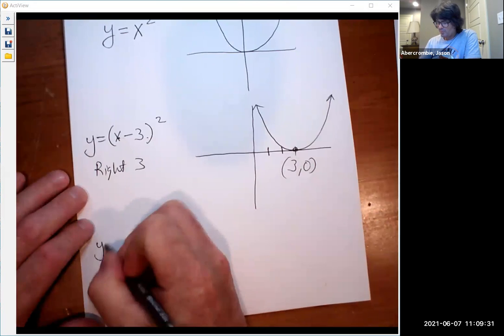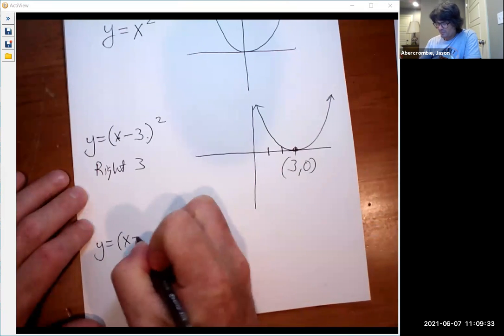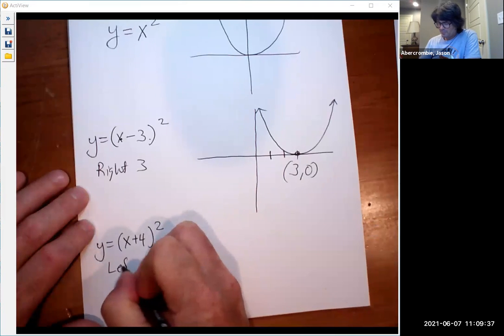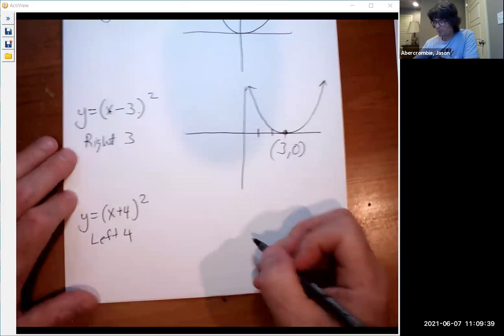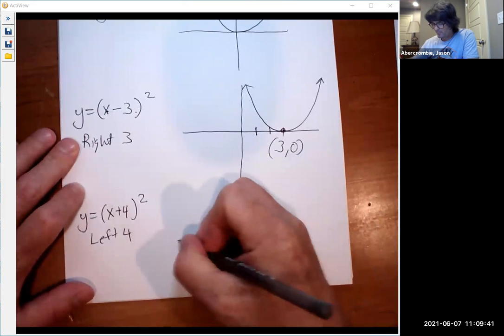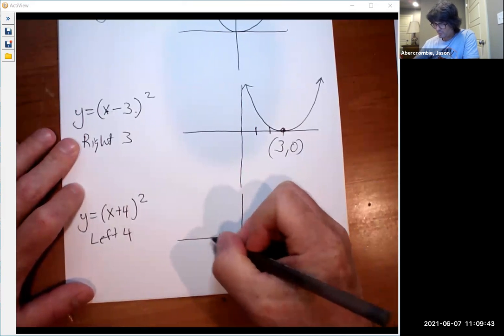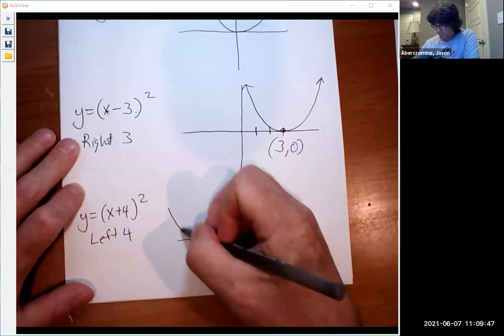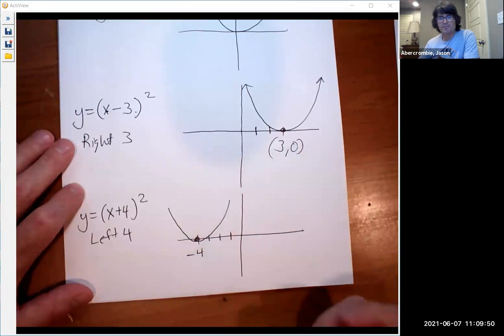Let's do y equals x plus 4 squared. This has moved left 4. If we were to graph it, 1, 2, 3, 4, graph looked like that. Easy enough.